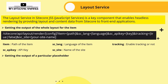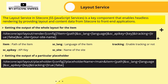To get the output for a particular placeholder, the API URL has one change: you pass the placeholder name in the URL. Whichever placeholder details you want, you pass the placeholder name there. All other parameters remain the same as used for the full layout of the item.